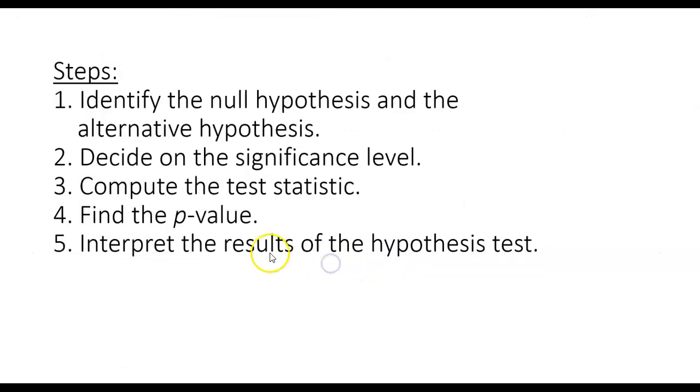Let's review those steps. First, we're going to identify the null and alternative hypothesis. Then, we're going to decide on the significance level. We'll compute the test statistic. We'll find the p-value. And using all of that information, we will interpret the results of the hypothesis test.